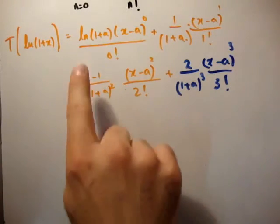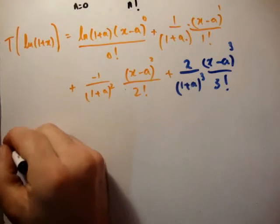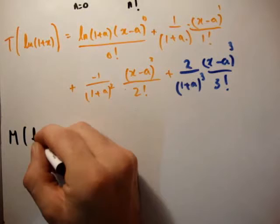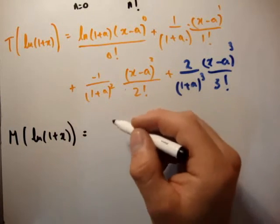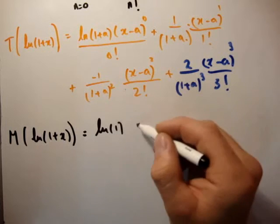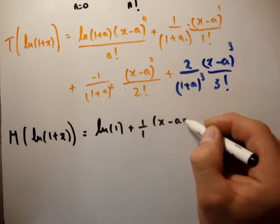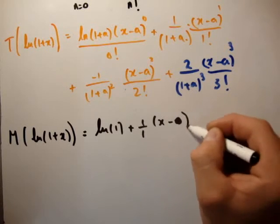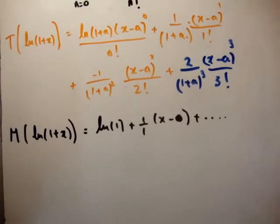So if you plug in a is equal to 0 into all of these, you're going to get the McLaren series expansion of our function, natural logarithm of 1 plus x. So the McLaren series of natural logarithm of 1 plus x is equal to natural logarithm of 1 plus 1 over 1, x minus 0, plus and so on. Now we see that, well, that's that.